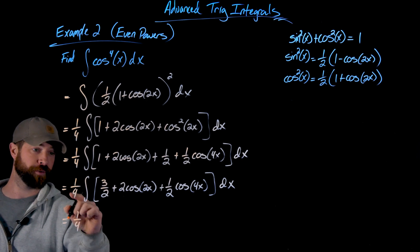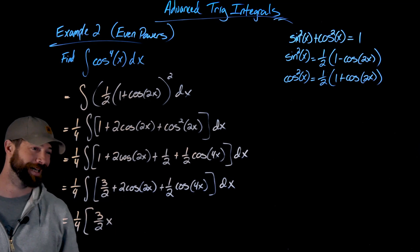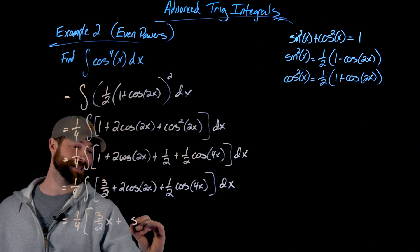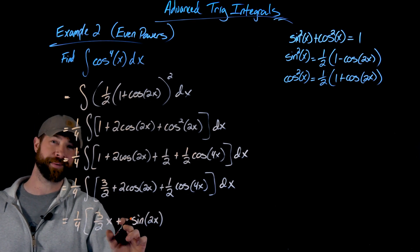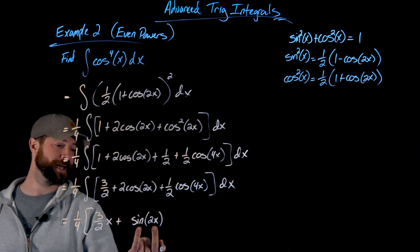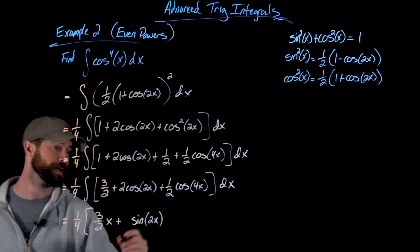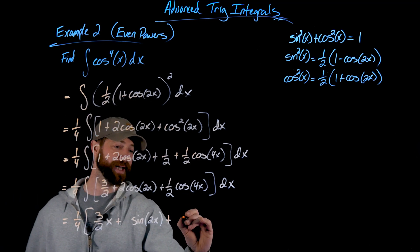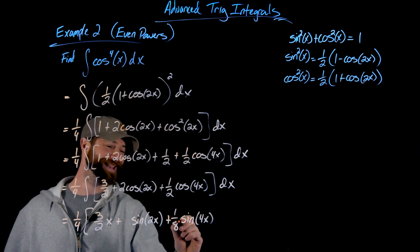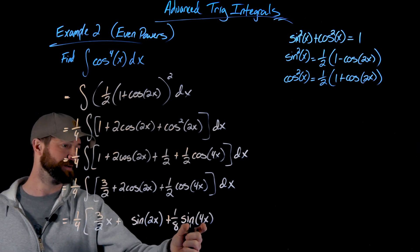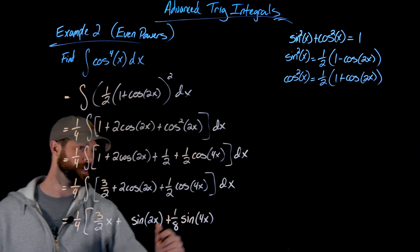So I have one-fourth outside, multiplied by: three-halves times x, plus sine of 2x divided by 2, plus one-eighth sine of 4x. As a quick check: differentiating sine of 2x gives cosine of 2x times 2, confirming the anti-derivative. And differentiating one-eighth sine of 4x gives one-eighth times cosine of 4x times 4, which gives one-half cosine of 4x — matching what we had.